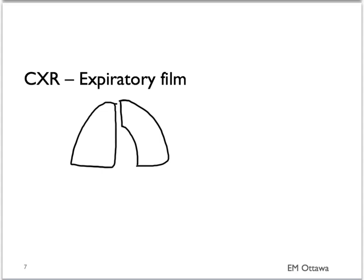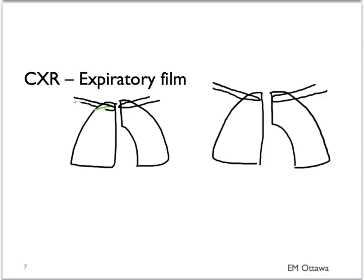Sometimes the pneumothorax is quite small. We can help the sensitivity of picking up a pneumothorax by asking for an expiratory film. If we have a very small pneumothorax, because of overlying bony structures we may not see it right away. If we ask the patient to blow all the air out of their lungs, the overall lung volume is smaller, so the pleura might move down further and therefore be easier to see on the chest X-ray.